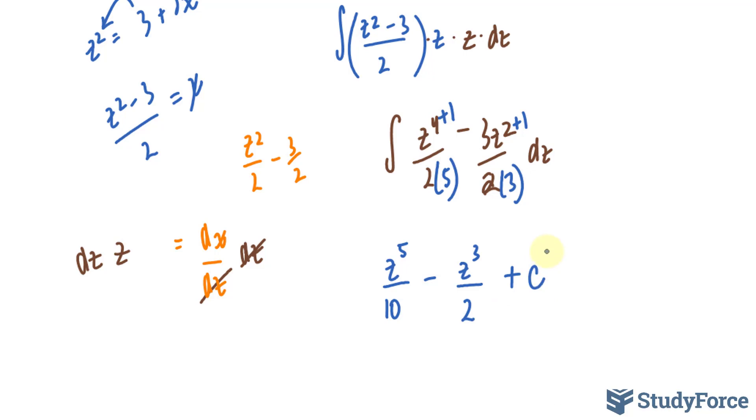But we started off with an expression that was in terms of x. This is in terms of z. All we have to do from here is revert back to what we set z equal to. And remember, z was set equal to the square root of (3 plus 2x), or (3 plus 2x) to the power of half. I'm going to take this expression and substitute it where I see those z's.